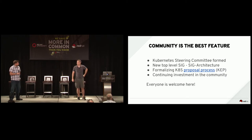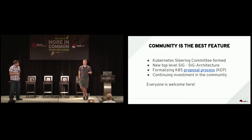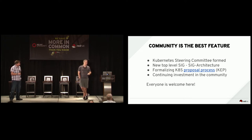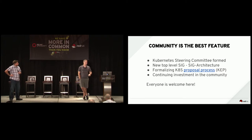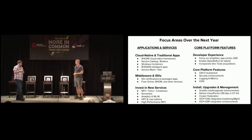Kubernetes now has a steering committee with one- and two-year elected terms, intended to help the community move forward. The SIGs are very important — groups of people who contribute and drive the project in areas like networking, cloud providers, and storage. There's a new top-level SIG: SIG Architecture, intended to set the direction of Kubernetes core and identify what is and isn't core Kubernetes. We're also formalizing processes for making change happen, drawing on the successes of previous large open source projects.